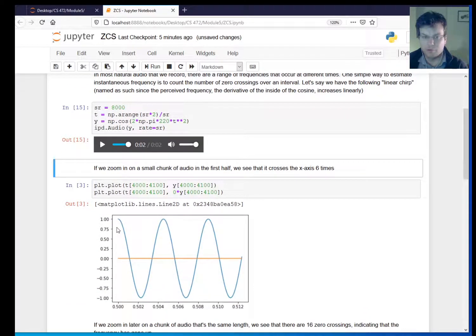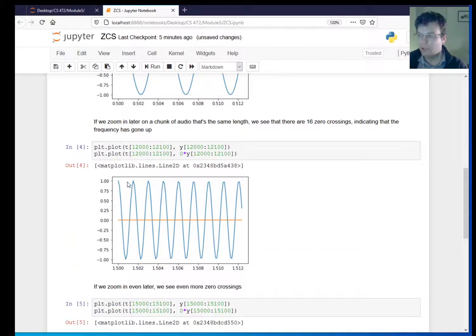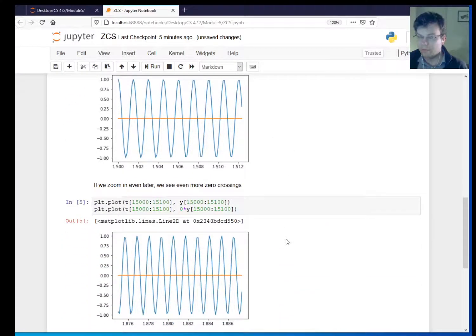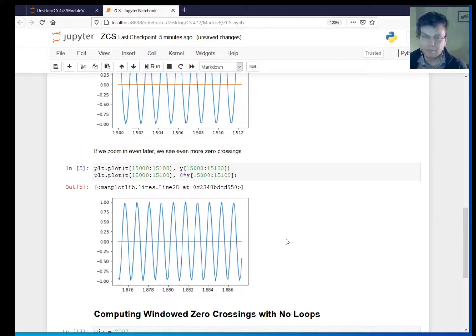So if I look at a window towards the beginning, it only crosses the x-axis one, two, three, four, five, six times. But if I look a little later, it crosses one, two, three, four, five, six, seven, so on and so forth, like 16 times. So you can see that's a way that you can get an idea of what the frequency is.